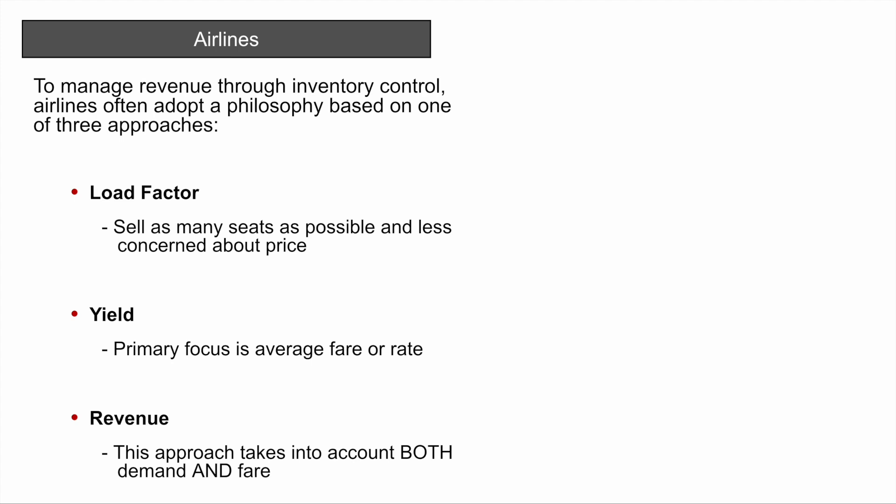So let's look at the airlines and then compare that against digital media. In airlines, when they first started trying to solve these problems, they looked at load factor — selling as many seats as possible — and were less concerned about price. Over time, price became more of a focus and turned into yield management. And finally, revenue management takes account of both the price and inventory dynamics.